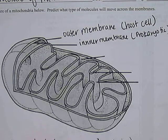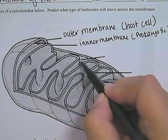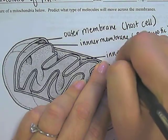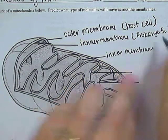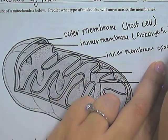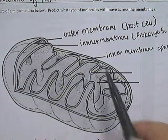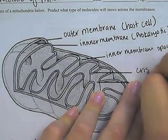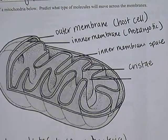The space between the outer membrane and the inner membrane is called the intermembrane space. The foldings of that inner membrane have a special name — they're called cristae. So cristae are just the foldings of the inner membrane.